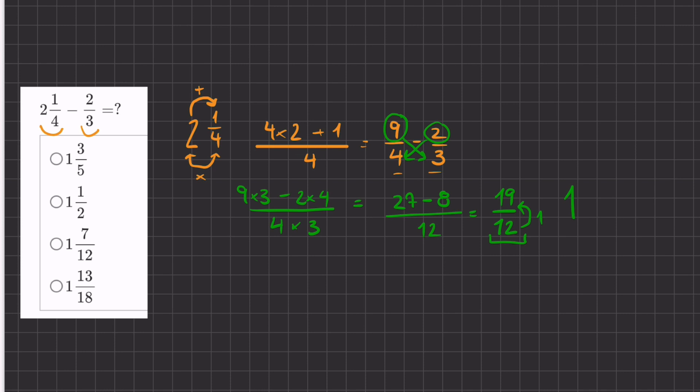And how many left over is there from 19? So we have 19 minus 12. And that will give us 7. So we have 7 over 12. And that's going to be our final answer.